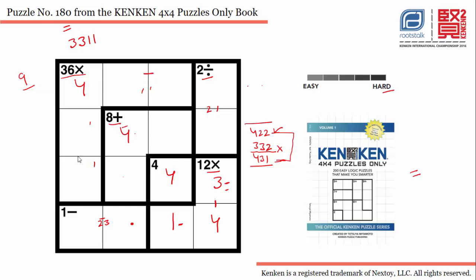That means we will be using 3 and 1 in these two cells, and another 3 and 1 in these two cells. Since 3 is already in this row, 1 is the solution for this cell. And since 1 is already in this column, we will be putting 3 here and 1 here.